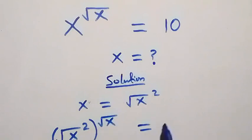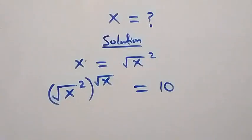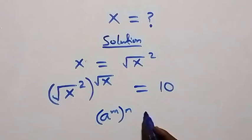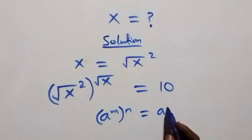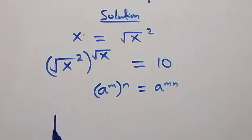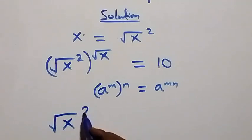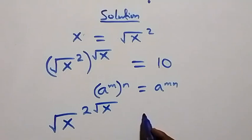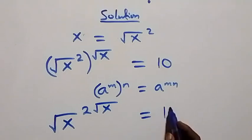This equals 10 on this side. From the law of indices, a raised to power m, raised to power n, is a raised to power m·n. Then root x multiplied gives us root x raised to the power 2·root x, which equals 10.